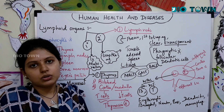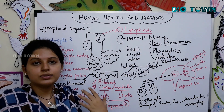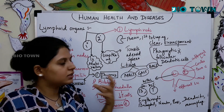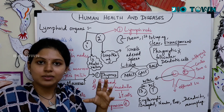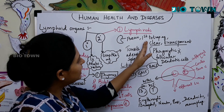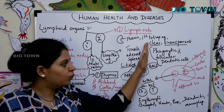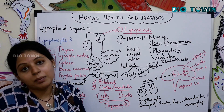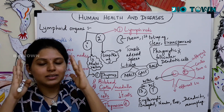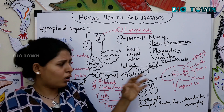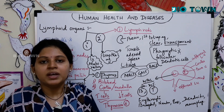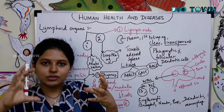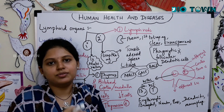Lymph nodes are bean-shaped structures and are the primary organs to trap antigens, serving as the first line of defense. They contain a clear transparent fluid called lymphatic fluid, which carries lymphocytes as well as phagocytic, follicular, and dendritic cells. Phagocytic cells are irregular in shape, resembling an amoeba, and they engulf antigens on contact.